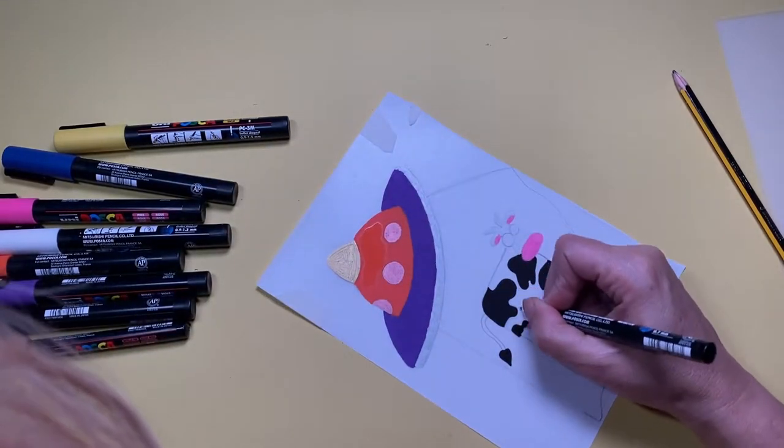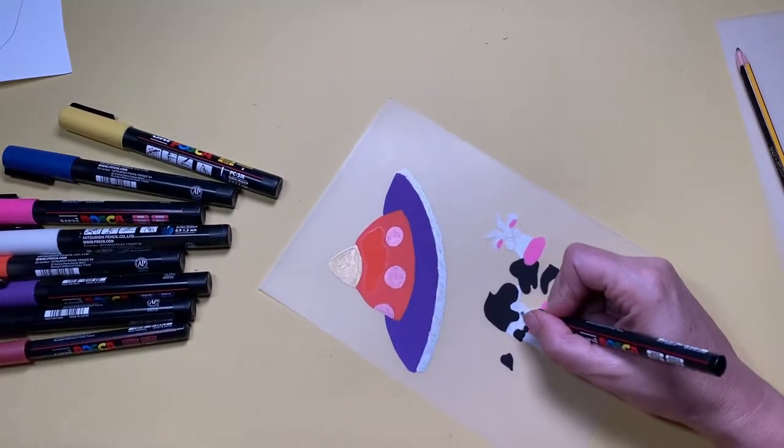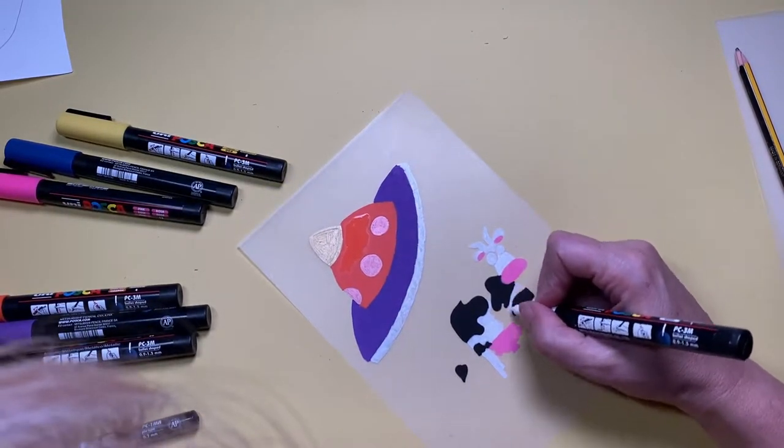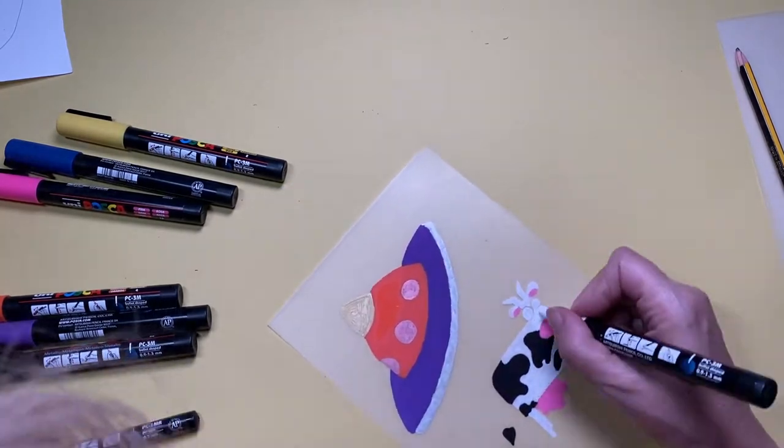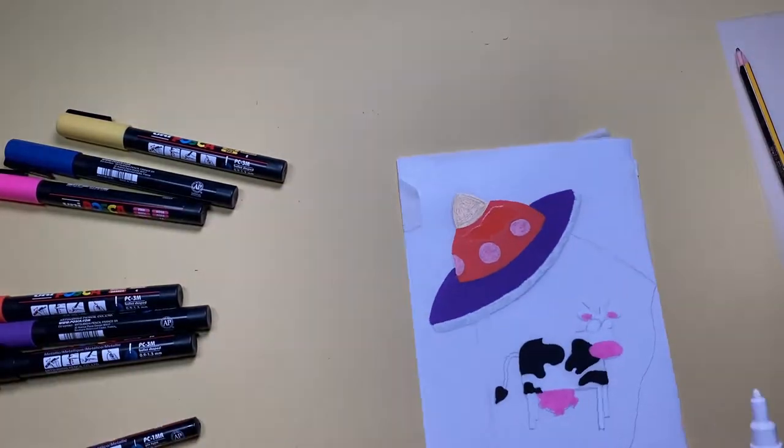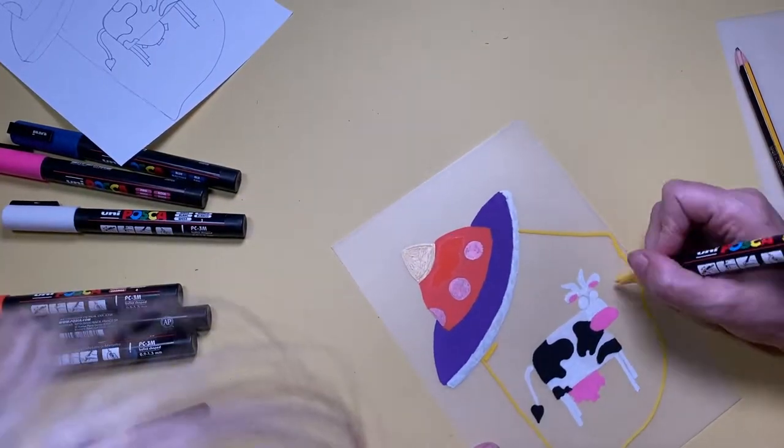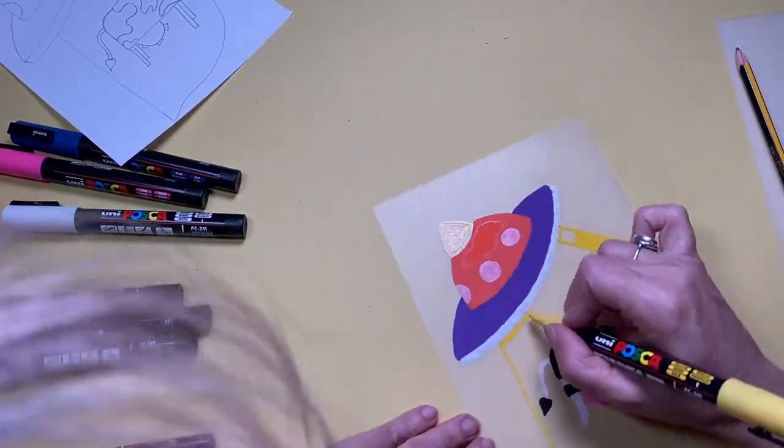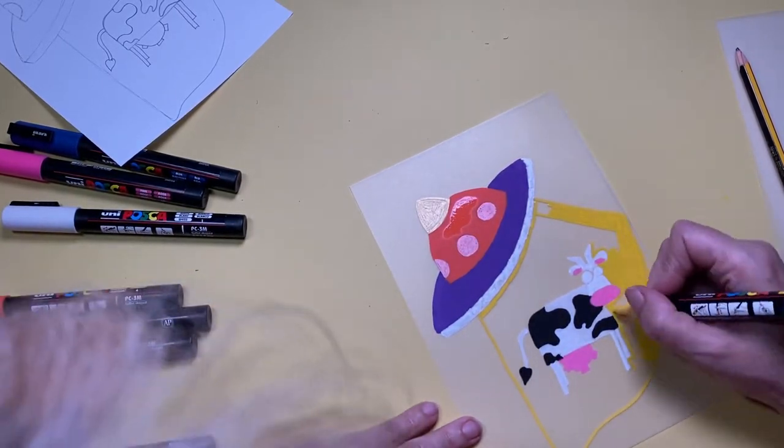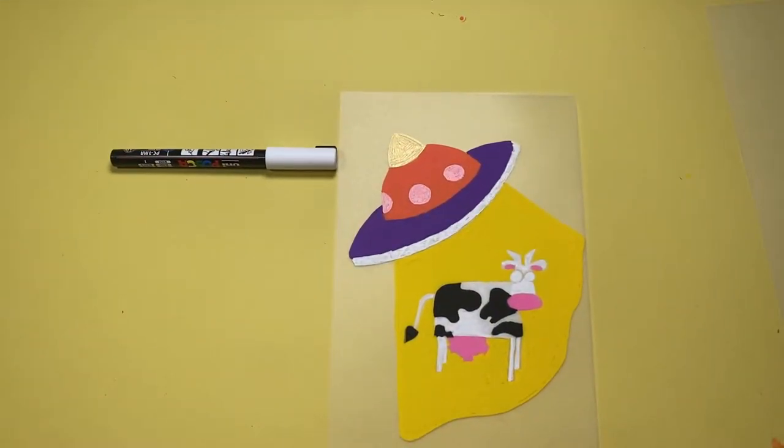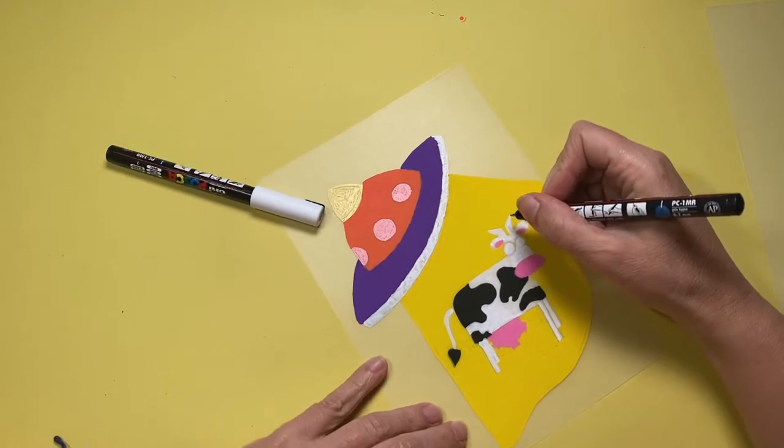The thing with using Posca pens with shrink plastic is if you put too many layers in one space they end up cracking when they're shrinking in the oven, so just being really careful not to go over the same place more than once. Now I'm adding the stencil back on top just to see where the lines of my abduction ray is and completing this by coloring it in with a nice bright yellow. Tada, and there she is in all her glory.